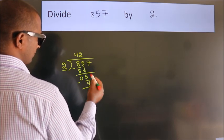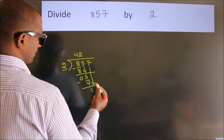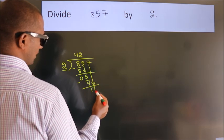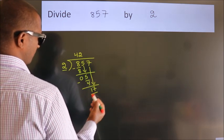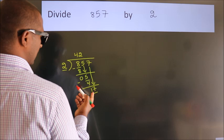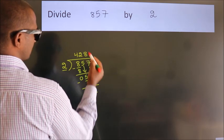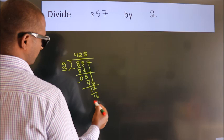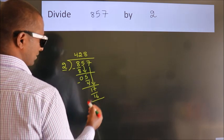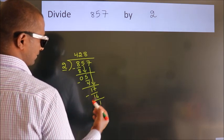After this, bring down the beside number, so 7 down, so 17. A number close to 17 in 2 table is 2 eights, 16. Now we subtract, we get 1.